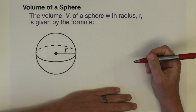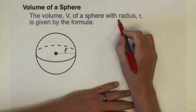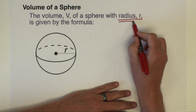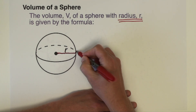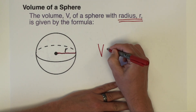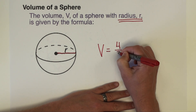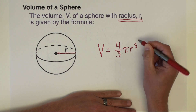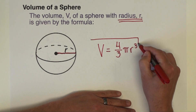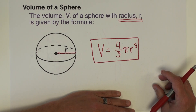Next we're going to look at the volume of a sphere. Just like with surface area, there's only going to be one independent variable — just the radius is all we need. The volume formula you need to know is four-thirds pi times radius cubed. Let's practice that with a few example problems.